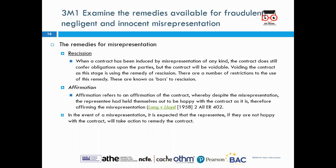Learning outcome 3M1: to examine the remedies available for fraudulent, negligent, and innocent misrepresentation. The remedies for misrepresentation — the first one is rescission. When a contract has been induced by misrepresentation of any kind, the contract is still operative but will be voidable. Voiding the contract at this stage is using the remedy of rescission. There are a number of restrictions to the use of this remedy.